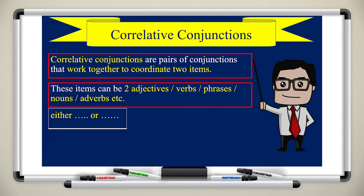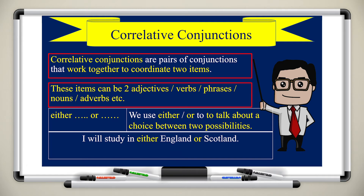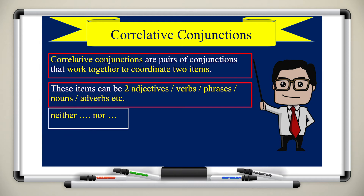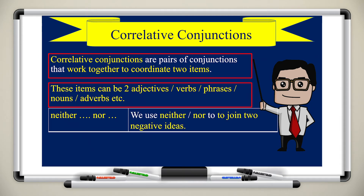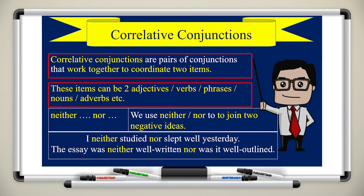We use 'either...or' to talk about a choice between two possibilities. For example: 'I will study in either England or Scotland.' You can either study at home or at the library. Remember: 'either' means one — you choose between two possibilities. We use 'neither...nor' to join two negative ideas. For example: 'I neither studied nor slept well yesterday.' The essay was neither well written nor well outlined. So: 'either' means one; 'neither' means none.